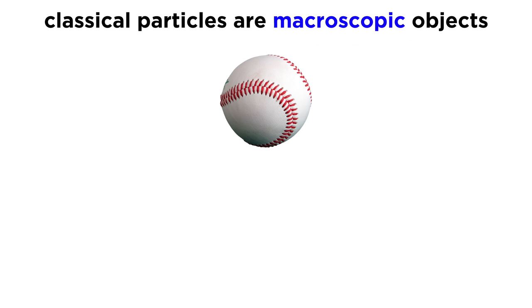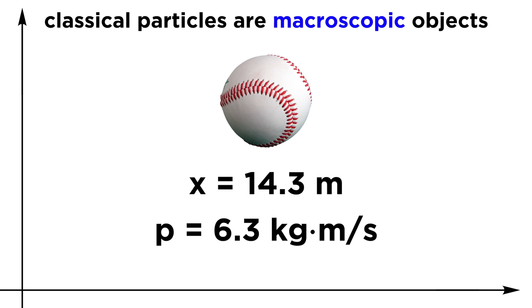The reason is that classical particles are macroscopic objects, meaning that they are much larger than an atom. When you do the math for a classical object in motion, its properties, such as position and momentum, have well-defined values that you can measure. We can say that some particle is at this position, and it has this momentum.